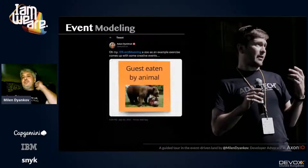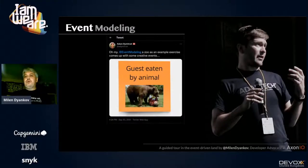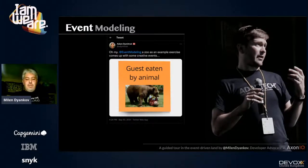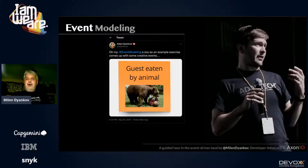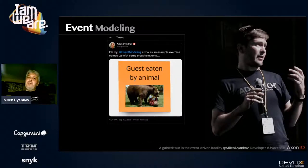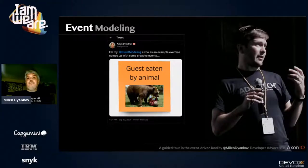One interesting thing I found from Adam Dimitri on Twitter was that while doing experiments with Event Modeling — trying to model a zoo — some interesting events appeared. The point is: when you start doing this, you may discover things your system may have to handle that you never thought of before.